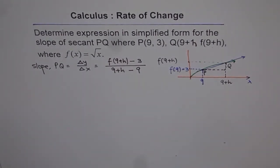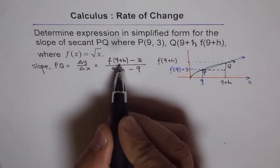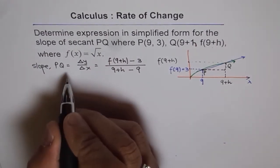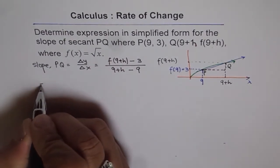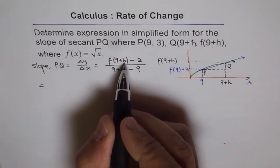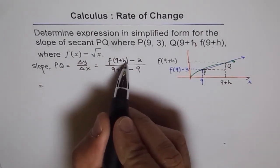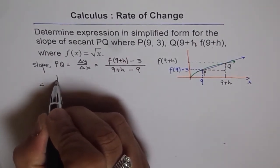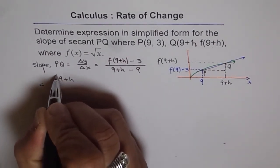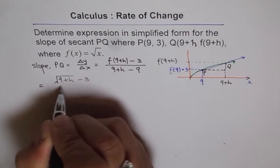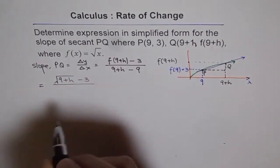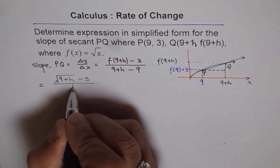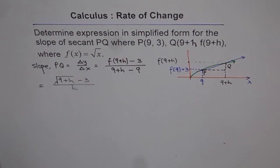Now the question is how to find this slope. Since f(x) = √x, we have f(9+h) = √(9+h). So we can write the slope of PQ as √(9+h) − 3 in the numerator, divided by h in the denominator. Now how do we simplify this?